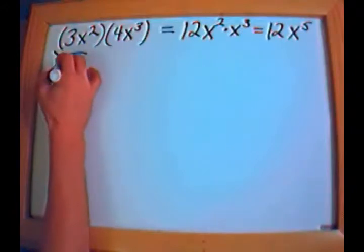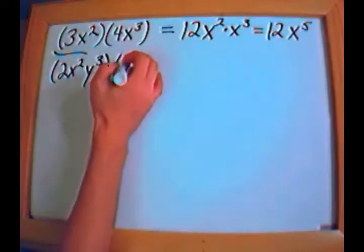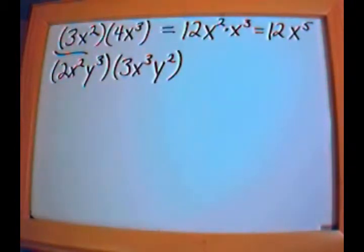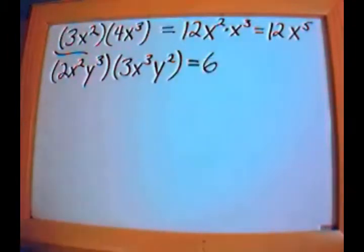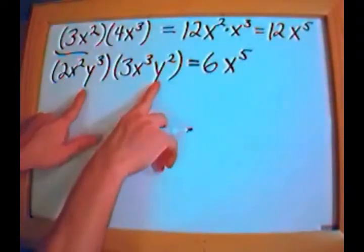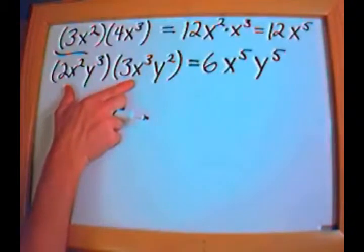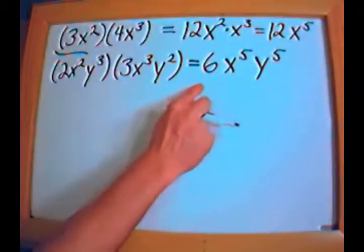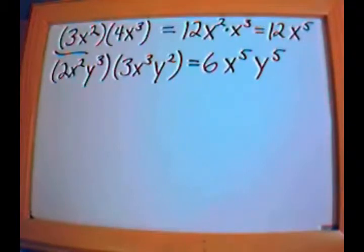What if we have something like 2x squared y to the third times 3x to the third y squared? I can multiply the numbers: 2 times 3 is 6. Then x squared times x to the third gives me x to the fifth, and y to the third times y squared gives me y to the fifth. I can't simplify further because x and y are different variables — it's sort of like apples and oranges.